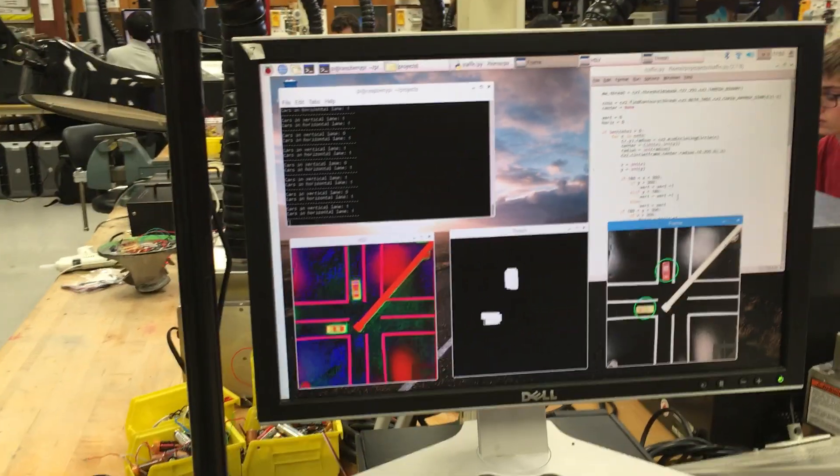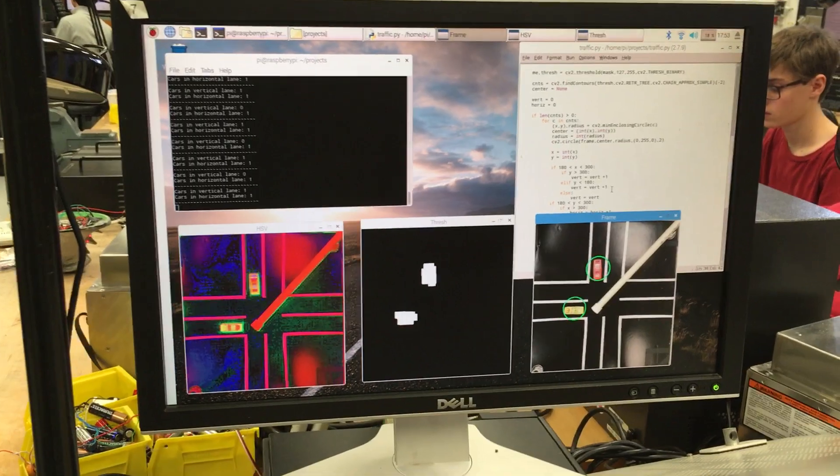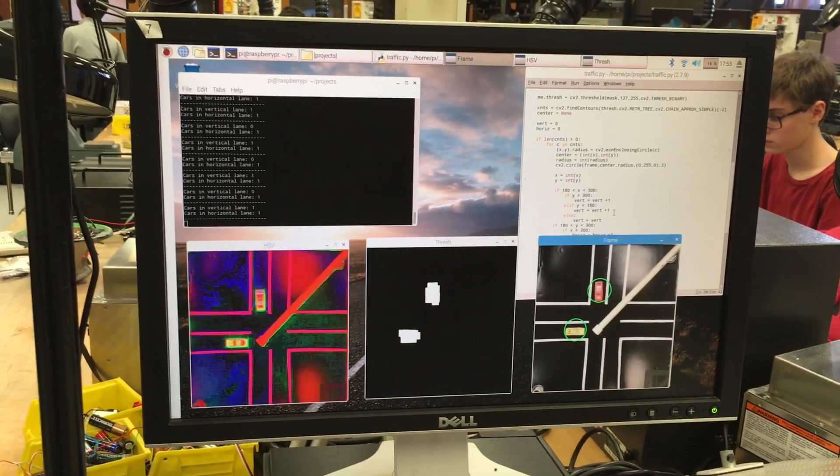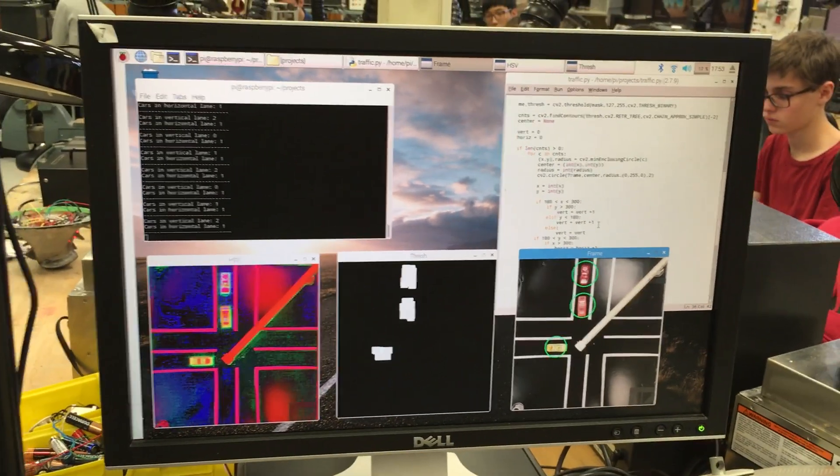And so by letting the most amount of cars through at a certain time, this reduces the amount of air pollution that is produced at the stoplight.